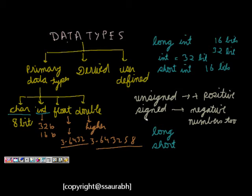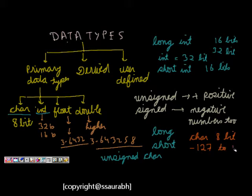Now we can have something like unsigned char. We know that char is 8 bit, so it means we can have numbers from minus 128 to plus 127. But if I do unsigned char, then it means it will be from 0 to 255.